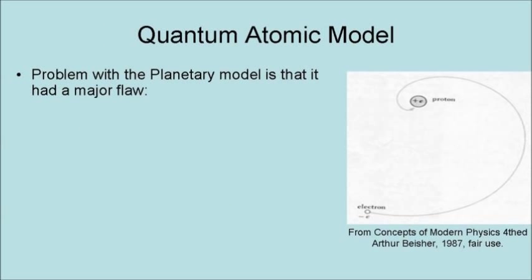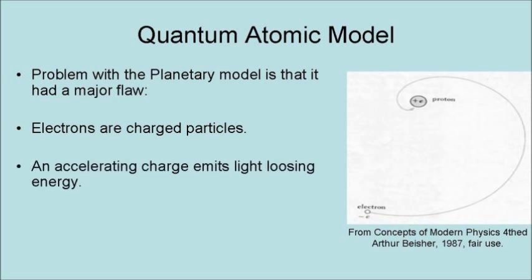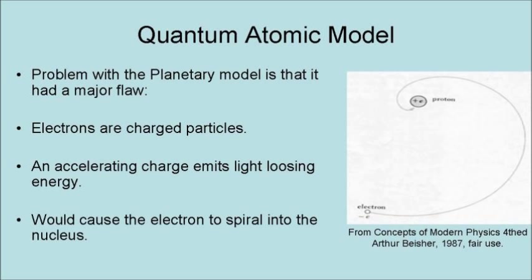The problem with the planetary model is that it had a major flaw. The problem with the planetary model is that electrons are charged particles, and an accelerating charge emits light, losing energy. This would cause the electron to spiral into the nucleus.